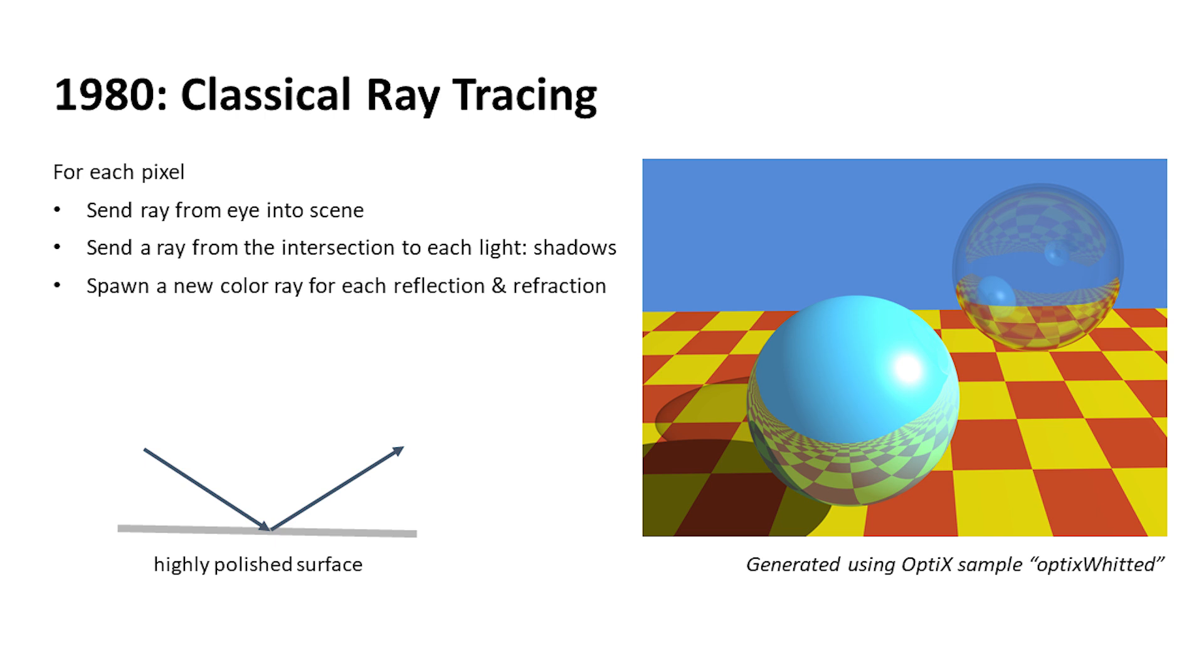It's really good for things like sharp shadows and reflections and refractions. The advantage of this kind of rendering algorithm is that you can basically do it from the eye.